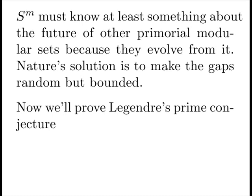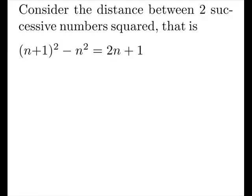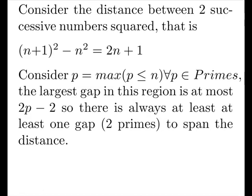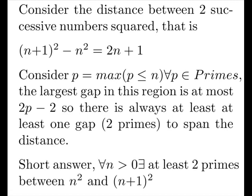Now we're going to use this to prove Legendre's prime conjecture. Consider the distance between two successive numbers squared, that is, it's 2N plus 1. Now the largest prime in this region is at most N, so the largest prime in that region would be at most 2N minus 2. So there's always going to be at least two primes to span the distance, at least one gap. So the short answer is for all N greater than 0, there exists at least two primes between N squared and N plus 1 squared.